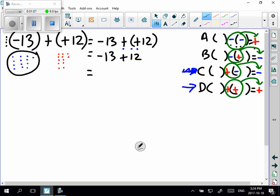At this stage, we can use the zero principle. And I'm going to use green to cancel them out. So 1, 2, 3, 4.